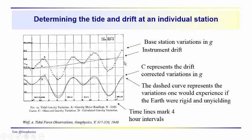Here's an example of a tide and drift curve that extends over a 24-hour period, from a paper by Wolf. These are the base station variations of g — they were continuously monitoring the variations in gravity at the base station during the course of a day. You can see a linearly upward increasing trend to these variations — they gradually rise through time — which could be due to mechanical strain on the springs within the instrument, producing a slight change in the elongation of the spring. There are also two curves where drift has been removed and we're just looking at the tidal variations.